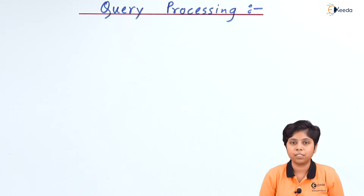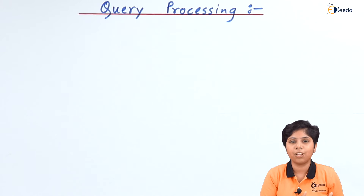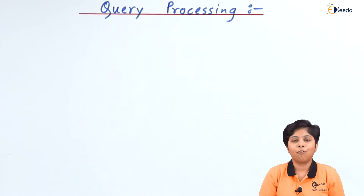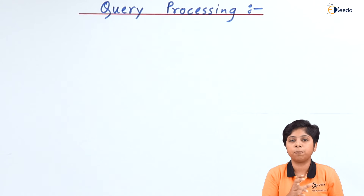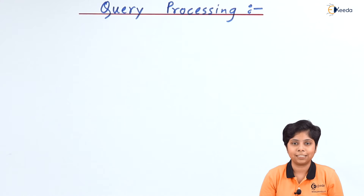After fetching a particular query, we need to process it. First the query is made by the user, then it needs to be translated to relational algebra, then it needs a query evaluation plan — that means in which way we can evaluate the query — and finally which evaluation plan we should choose to get an optimized one. These are the main steps involved in query processing.